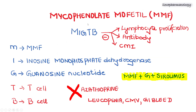Next, the very important drug mycophenolate mofetil (MMF), remembered by the mnemonic MIG-TB. Mycophenolate mofetil inhibits inosine monophosphate dehydrogenase, which is responsible for guanosine nucleotide synthesis. Guanosine nucleotide is required for T-cell and B-cell functioning. By inhibiting inosine monophosphate dehydrogenase, mycophenolate mofetil inhibits guanosine nucleotide production, thereby inhibiting T-cell and B-cell function, lymphocyte proliferation, antibody release, and cell-mediated immune responses.